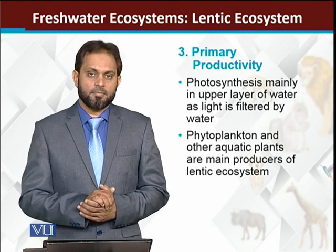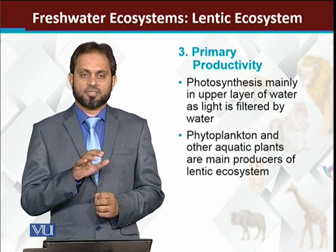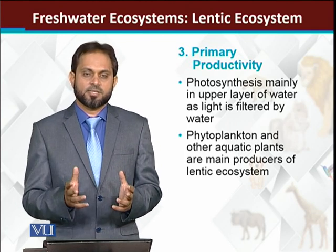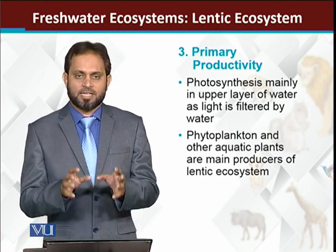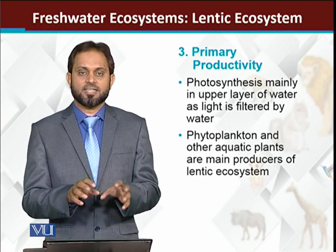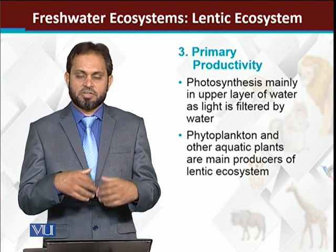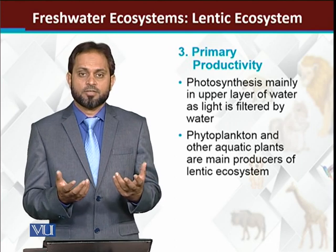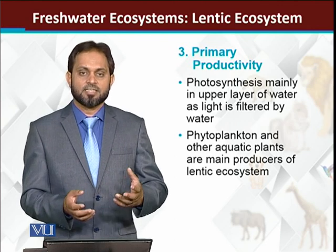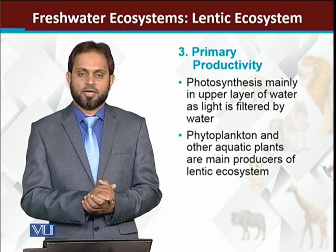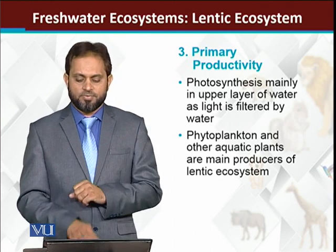The primary productivity of lentic ecosystems — the biomass which autotrophs synthesize. In lentic water bodies, the most important autotrophs are algae. Algae are submerged plants that perform photosynthesis and produce biomass. Primary productivity is dependent on algae and also on different types of plants.